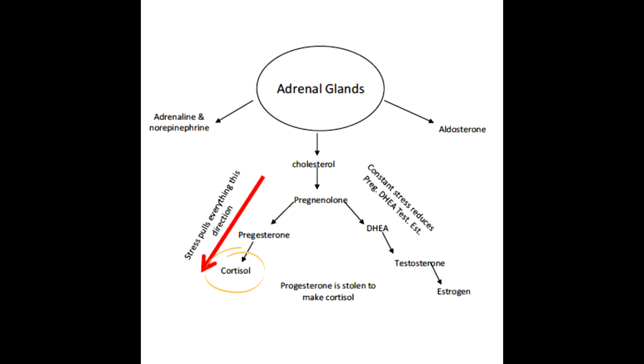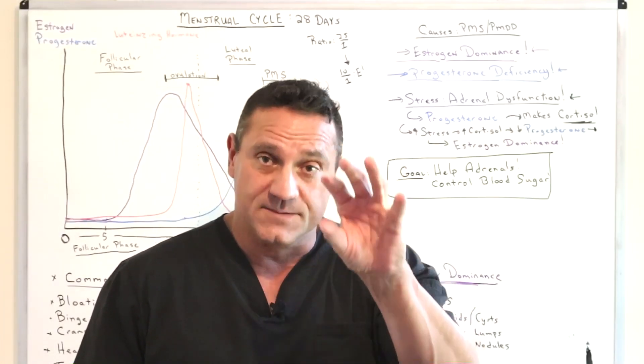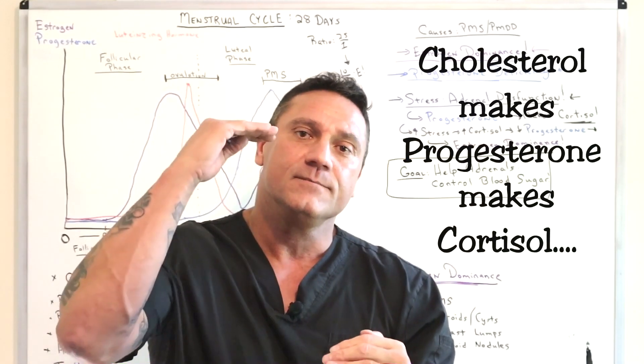Let's go upstream. What makes cortisol? Progesterone. What makes all of this is cholesterol. So cholesterol makes pregnenolone, which moves over a couple of other boxes, makes progesterone. And down, what makes cortisol? Progesterone.